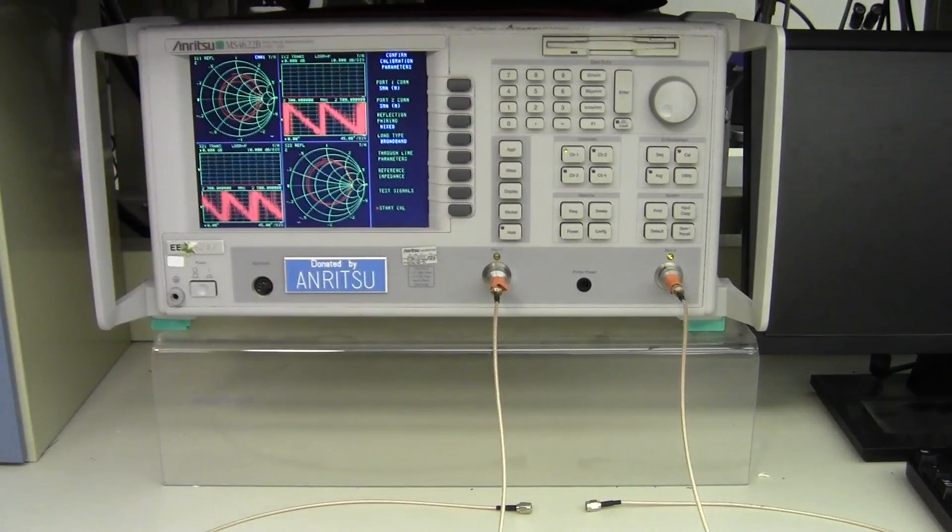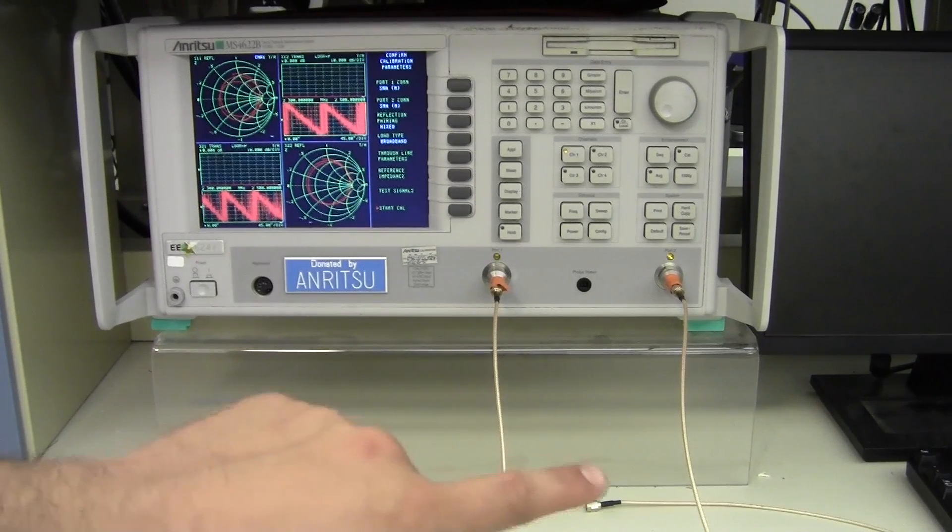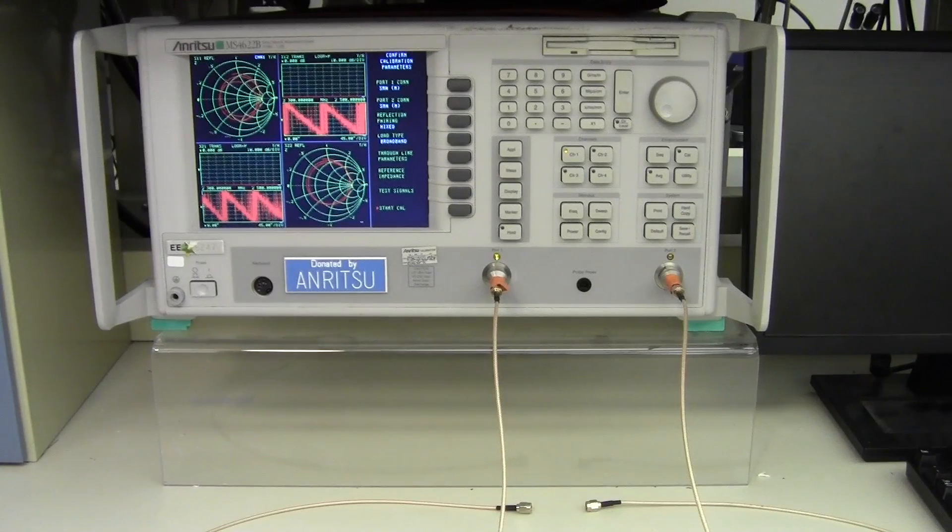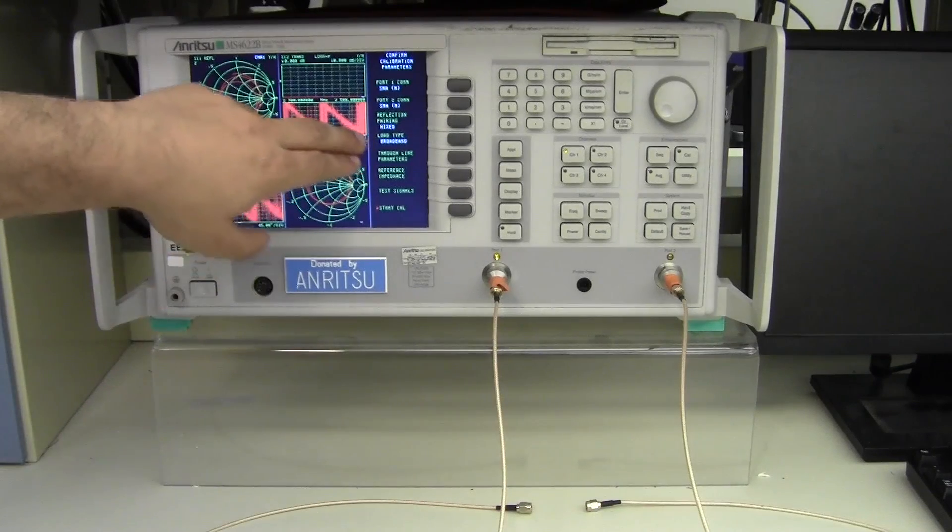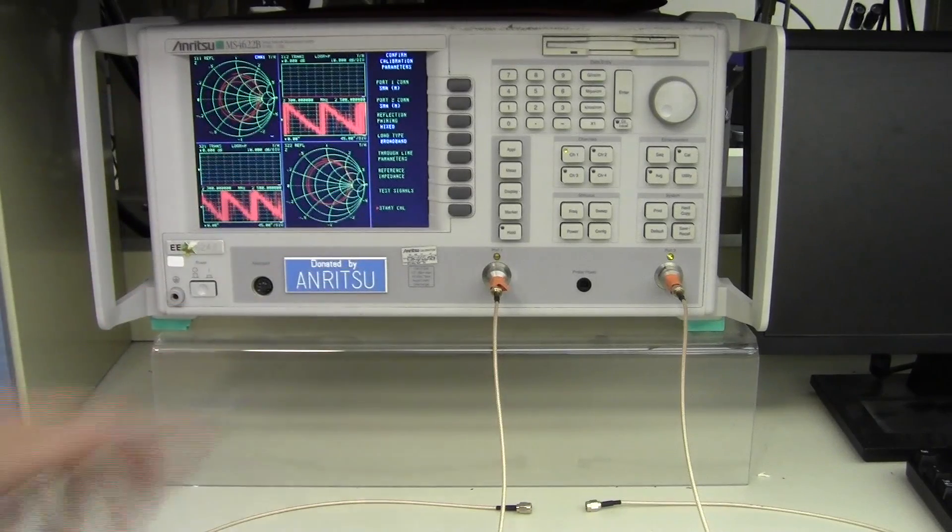Reflection pairing refers to the calibration step where we're going to be using the open and short, and it asks if we would like to use either a mixed pair or a matched pair. Our calibration kits only have one of each, so we need to have a mixed so that we can put the short on one port and the open on the other port and then switch them. Load type is broadband.